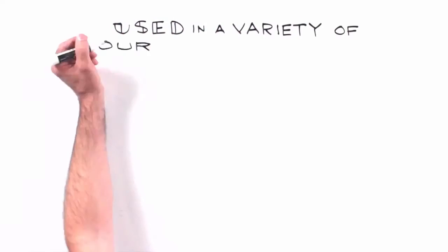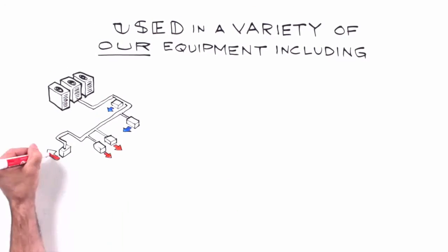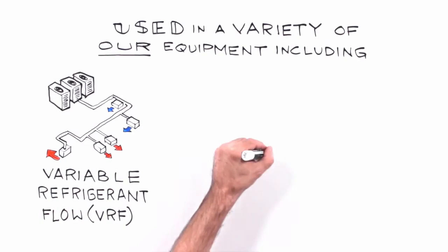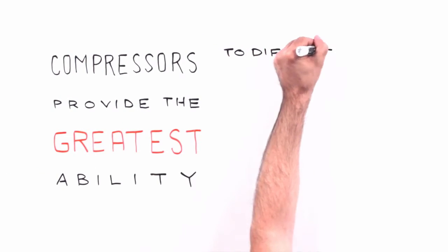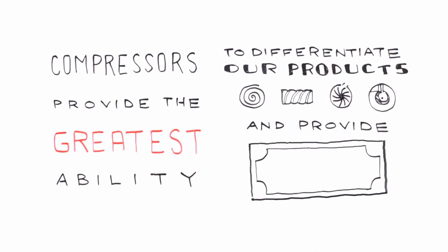Scroll compressors are used in a variety of our equipment including variable refrigerant flow or VRF, unitary for residential and light commercial and rooftops. Compressors provide the greatest ability to differentiate our products and provide value to our customers.